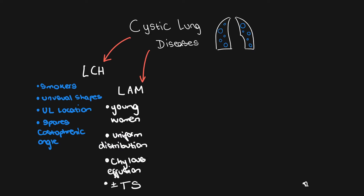The next differential to consider is Lymphangioleiomyomatosis, or LAM. This is a condition that occurs in young women of childbearing age or patients with tuberous sclerosis. Differently to LCH, the cysts are usually of uniform shape and also uniformly distributed throughout the lungs. A thing that is quite specific to LAM is that patients usually have chylous effusions.